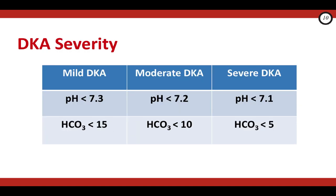It's important to classify pediatric DKA into mild, moderate, or severe because it's instrumental in guiding management. This classification is based purely on lab values. Mild DKA: pH less than 7.3 or bicarb less than 15. Moderate DKA: pH less than 7.2 or bicarb less than 10. Severe DKA: pH less than 7.1 or bicarb less than 5.